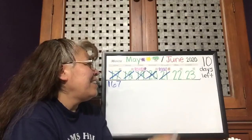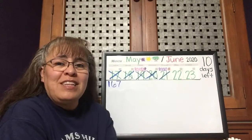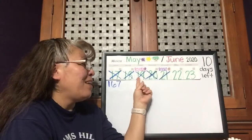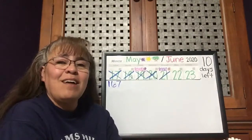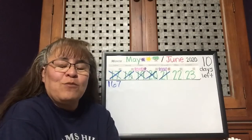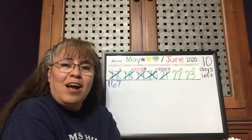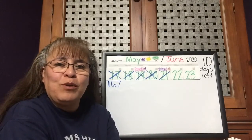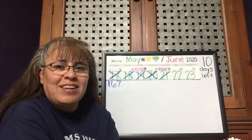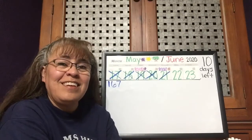And today is Autumn's birthday! Tuesday was Bosma's, and today is Autumn's birthday. I want to wish a happy birthday to Autumn and hope you have a great day. She's turning six too.